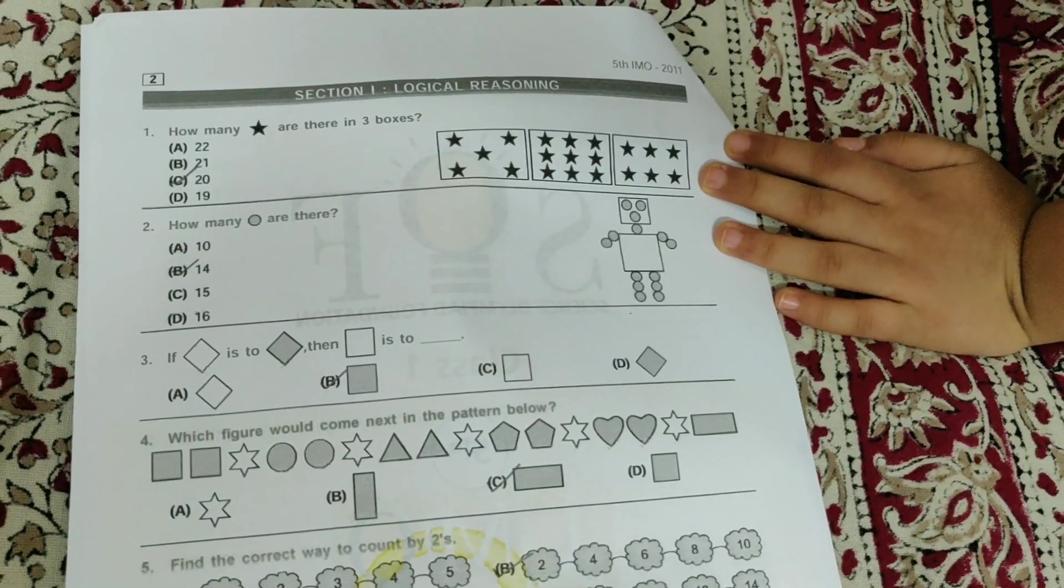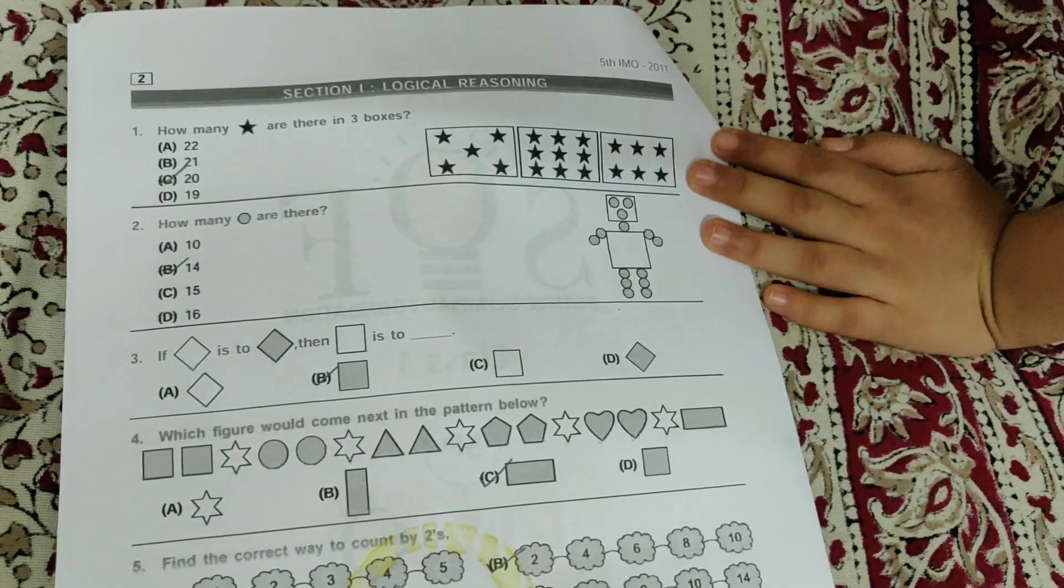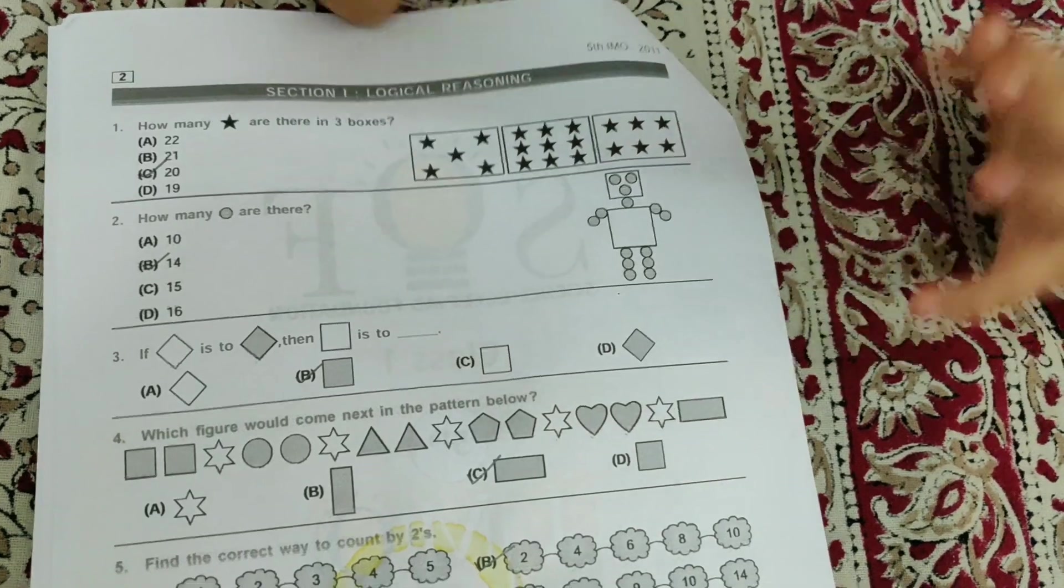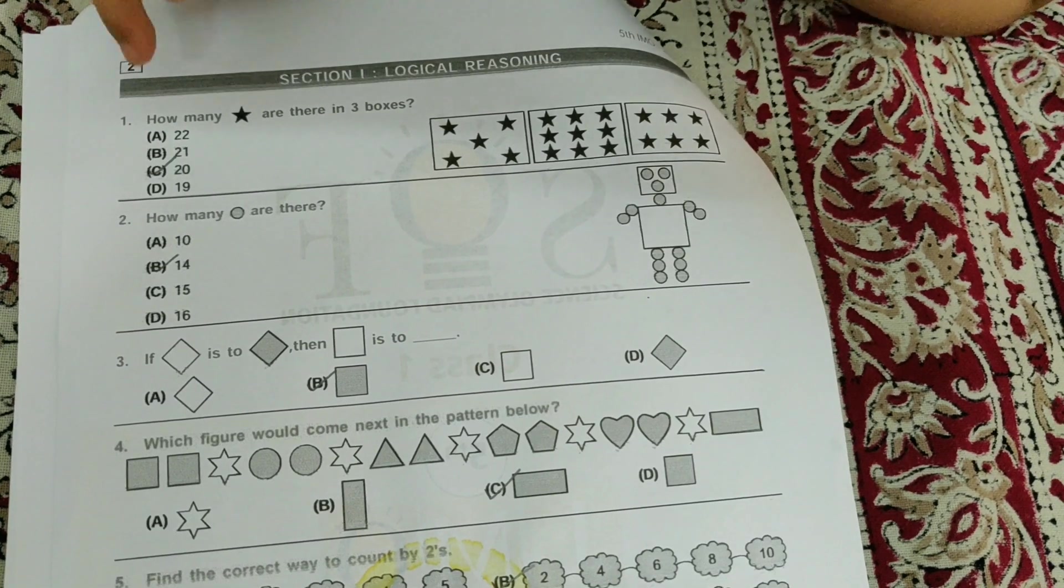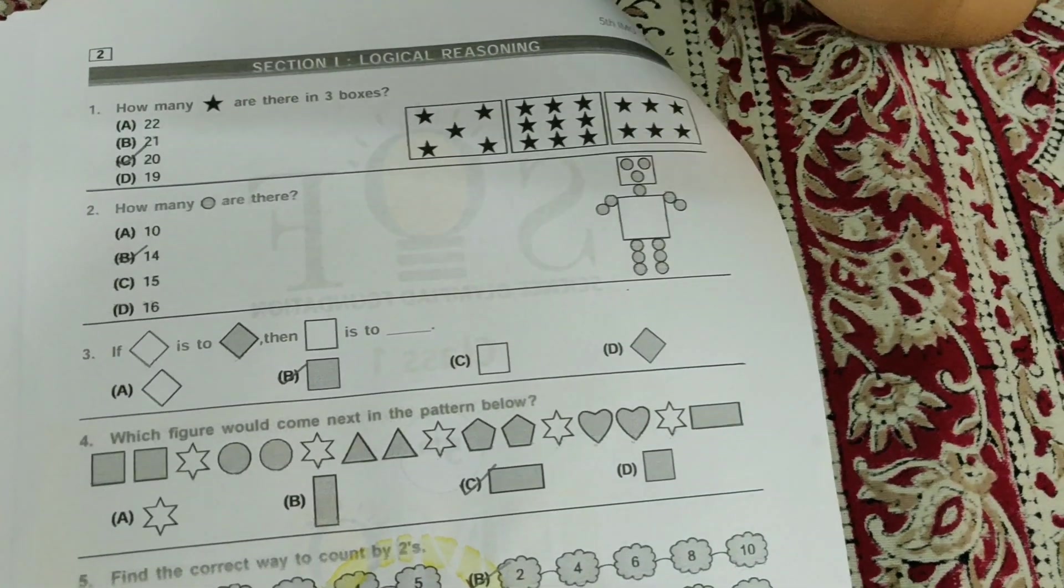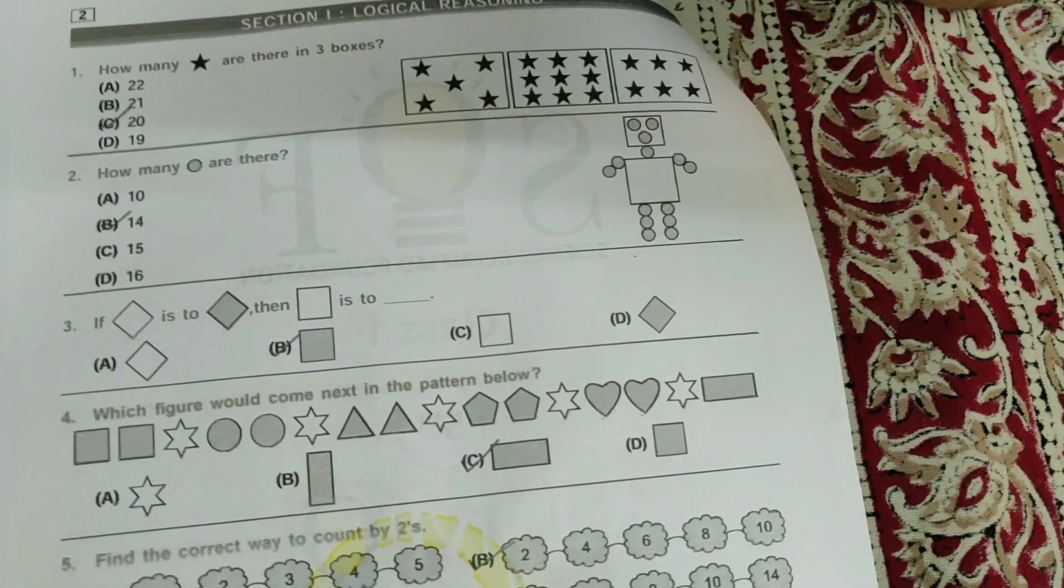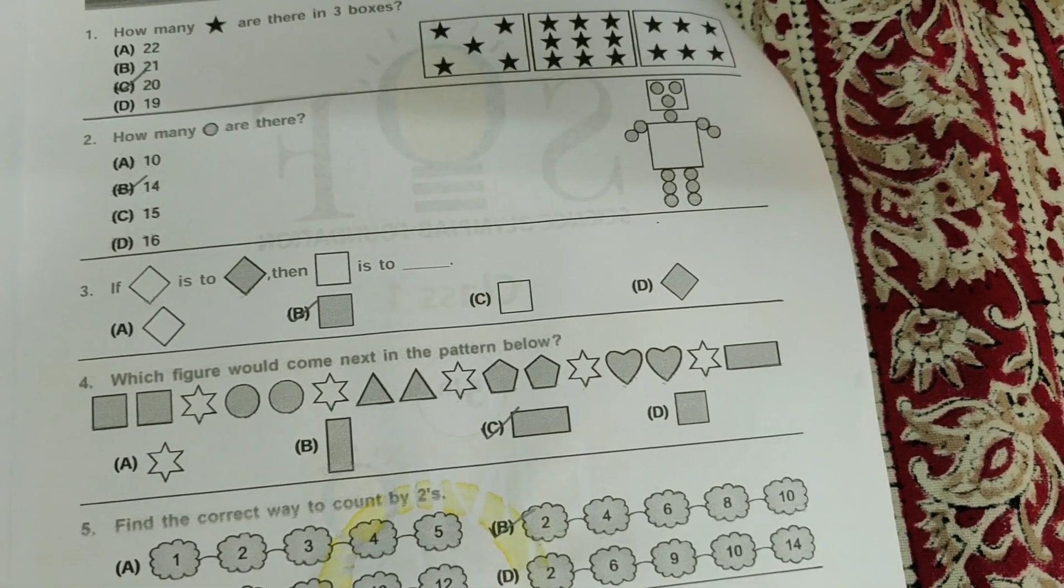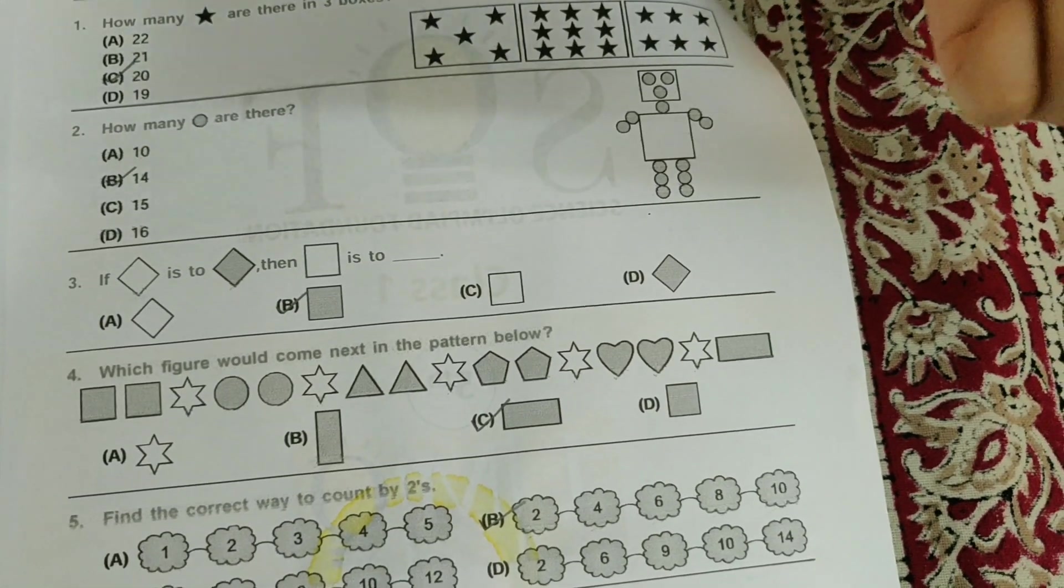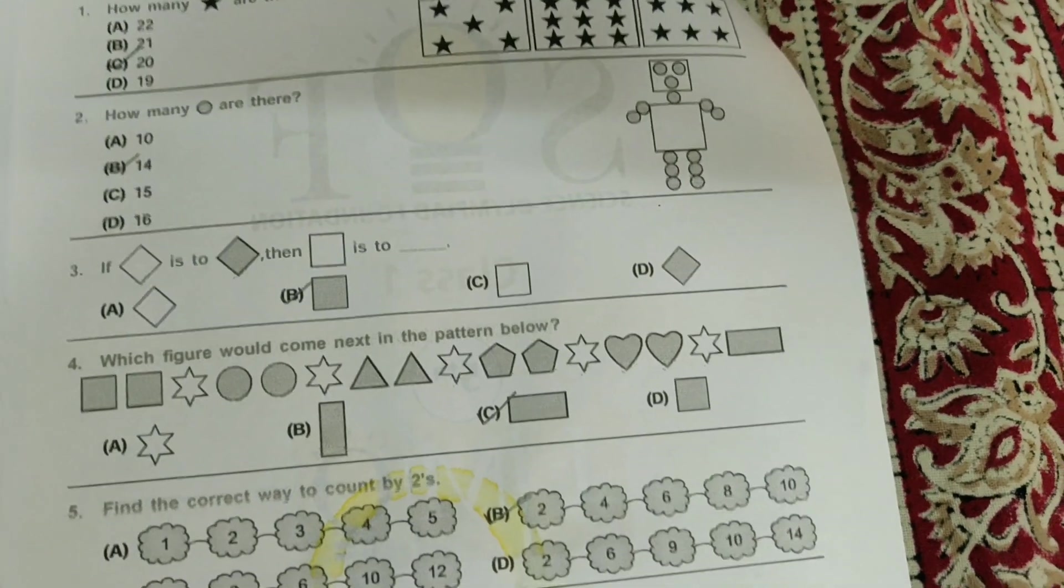How many stars are there in 3 boxes? So it's easy, you should just count them and just tick it. I got 20. How many circles are there? So you just need to count the circles. It's very easy. And I got 14 as the answer.